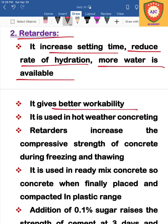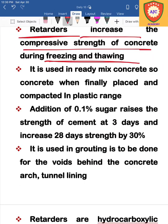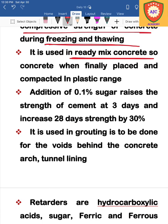The main use of retarders is in hot weather environments and construction work, improving freezing and thawing resistance. If you use retarders, you can increase the setting time. Retarders are used in ready-mix concrete — when you mix the concrete, you can compact and place it in the plastic range. A famous retarder is calcium chloride.